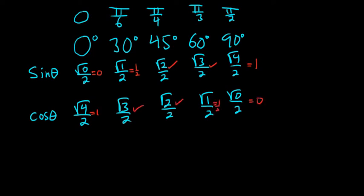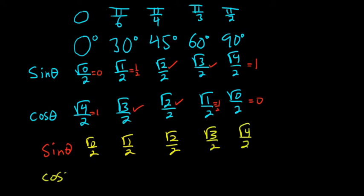So again, let me do it one more time for you. For sine theta, you just do square root of 0 over 2, square root of 1 over 2, square root of 2 over 2, square root of 3 over 2, square root of 4 over 2. For cosine theta you just go backwards. You start at 4: square root of 4 over 2, square root of 3 over 2, square root of 2 over 2, square root of 1 over 2, square root of 0 over 2.